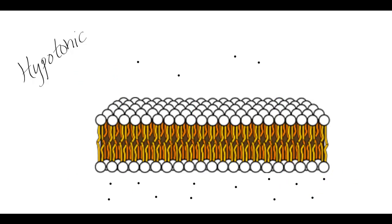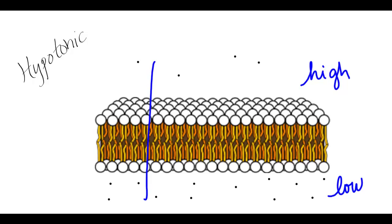In a hypotonic solution, the water concentration outside of the cell is high and the water concentration inside of the cell is low. So we're going to have water flowing from its high concentration to its low concentration — water flows into the cell.